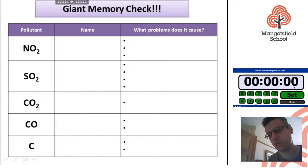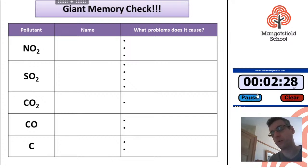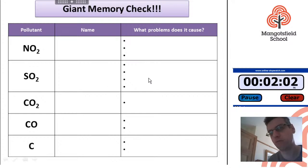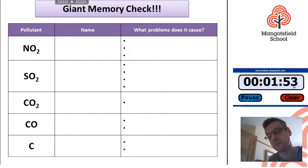Here is a giant memory check of the five atmospheric pollutants we've learnt about. I've put the formulas in — can you remember their names and what problems they cause? There are twelve bullet points. Can you work out which three problems NO2 causes, which four problems SO2 causes, and also add in your memory of last lesson? See how much you can remember about these five atmospheric pollutants.